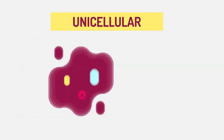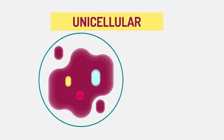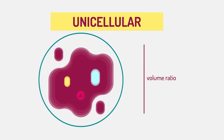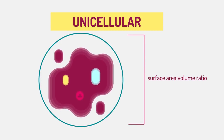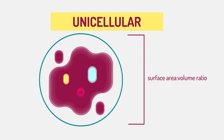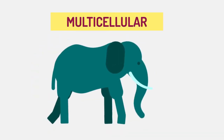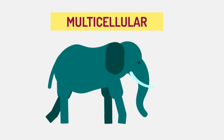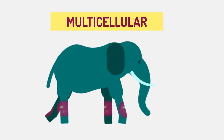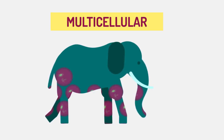Unicellular organisms cannot grow large because they are limited by a surface area to volume ratio, whereas multicellular organisms can increase the number of small cells to give a large size overall.